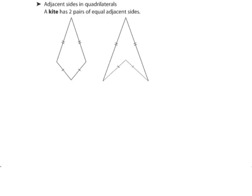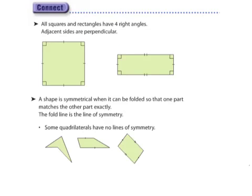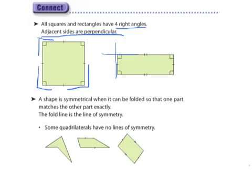Lastly, we have a kite. We could discuss the adjacent sides on a quadrilateral. Adjacent means beside each other, so we'll be discussing those two sides, or those two sides. In this case, each pair of adjacent sides are equal — they are the same length. These two sides are the same length, and these two sides are the same length. The same happens with this kite — you can also see that from the hatch marks. Remember, if they both have one hatch mark they're the same length, if they both have two they're the same length. We could also discuss how many adjacent sides are perpendicular. Here we have four right angles — all four sides are perpendicular.